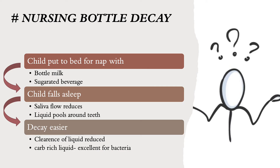You must be wondering why this happens. The biggest reason is when a child is put to bed for a nap — either in the afternoon or at night — with bottle milk or any sugary beverage. When the child falls asleep, two things happen: first, salivary flow reduces, making it easier for the liquid to pool around the teeth; the child's sleeping posture also aids in this pooling. Clearance of the liquid is reduced, and the carbohydrate-rich liquid becomes an excellent medium for bacteria to act upon, release acid, and eventually cause decay.